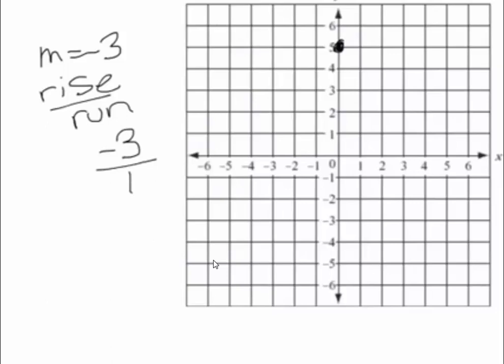So we're going to go down, because it is negative, we're going to go down 1, 2, 3 places and go to the right one. You're always going to run to the right. And then you're going to go down 1, 2, 3 and then to the right one again.